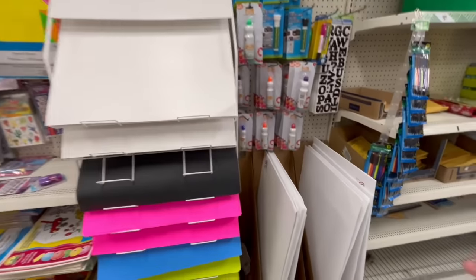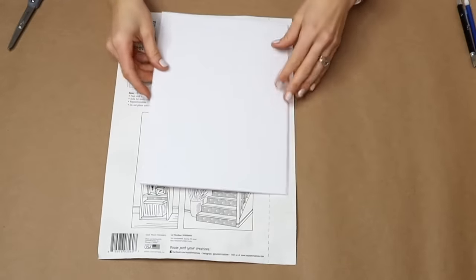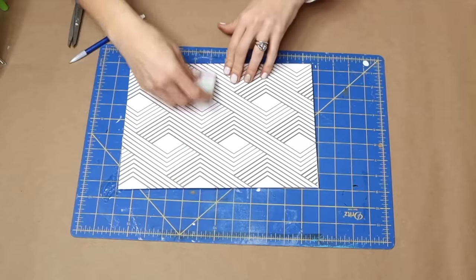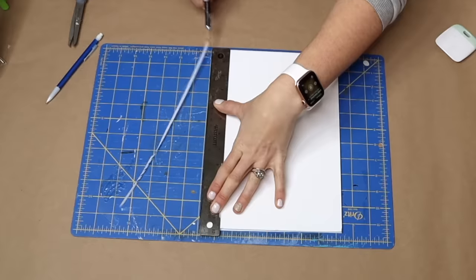I'm using one large piece of foam core from Dollar Tree and two sheets of peel and stick wallpaper. Next, I'm going to use a squeegee to apply directly to the foam core board.